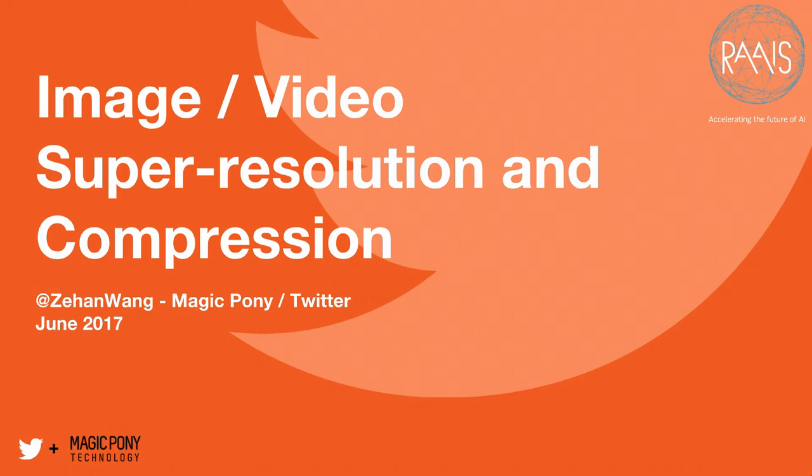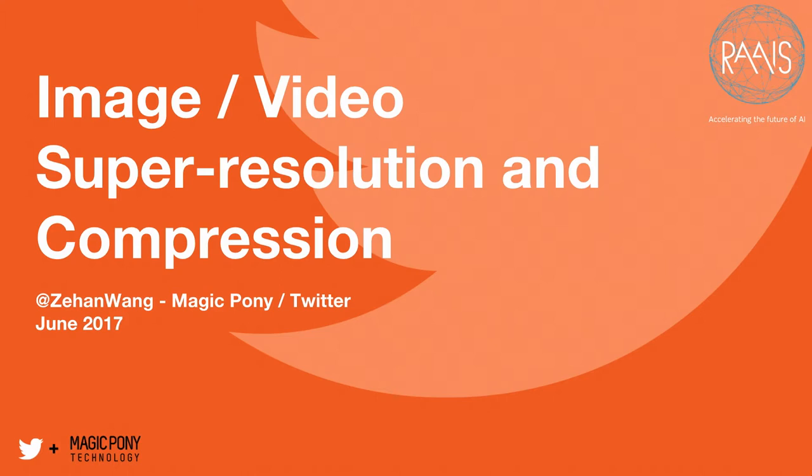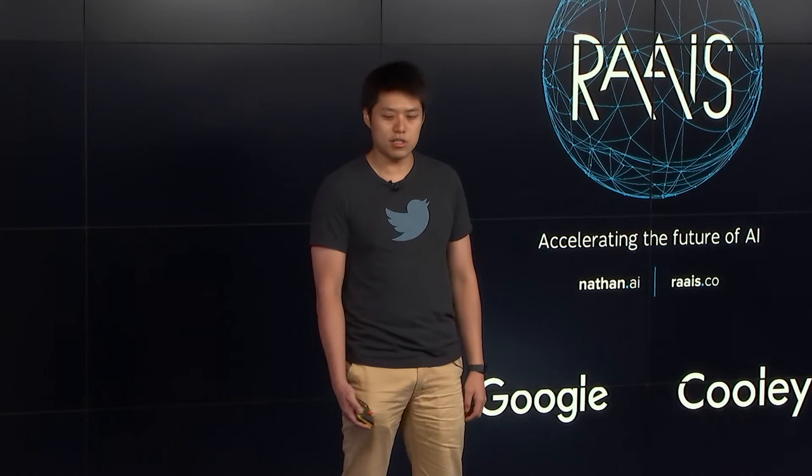Good morning everyone. I'm going to talk about one of the core pieces we've been doing ever since we started Magic Pony. But first, briefly, what Magic Pony does at Twitter: we're effectively the embedded ML team within the image and video organization on Twitter — the computer vision arm — and a lot of our work is focused around video performance through applications of machine learning. Super resolution and compression is basically one of the key components.